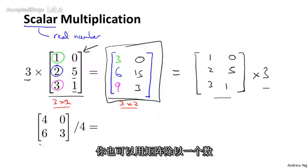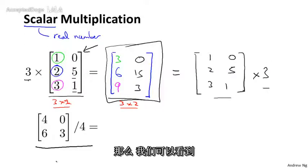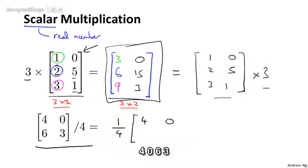You can also take a matrix and divide it by a number. So taking this matrix and dividing it by 4, this is actually the same as taking the number 1 quarter and multiplying it by this matrix 4, 0, 6, 3.